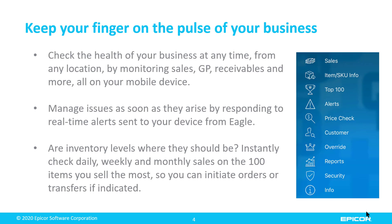Think about alerts. We have alerts that come to Eagle Browser, such as quantity on hand has gone zero, a special order came in, or if the backup did not succeed. We want to be proactive and take action as soon as these issues arise. Not having to be at a PC, you can look at those alerts, or check stocking levels or a retail on an item, all easily managed right from the app.